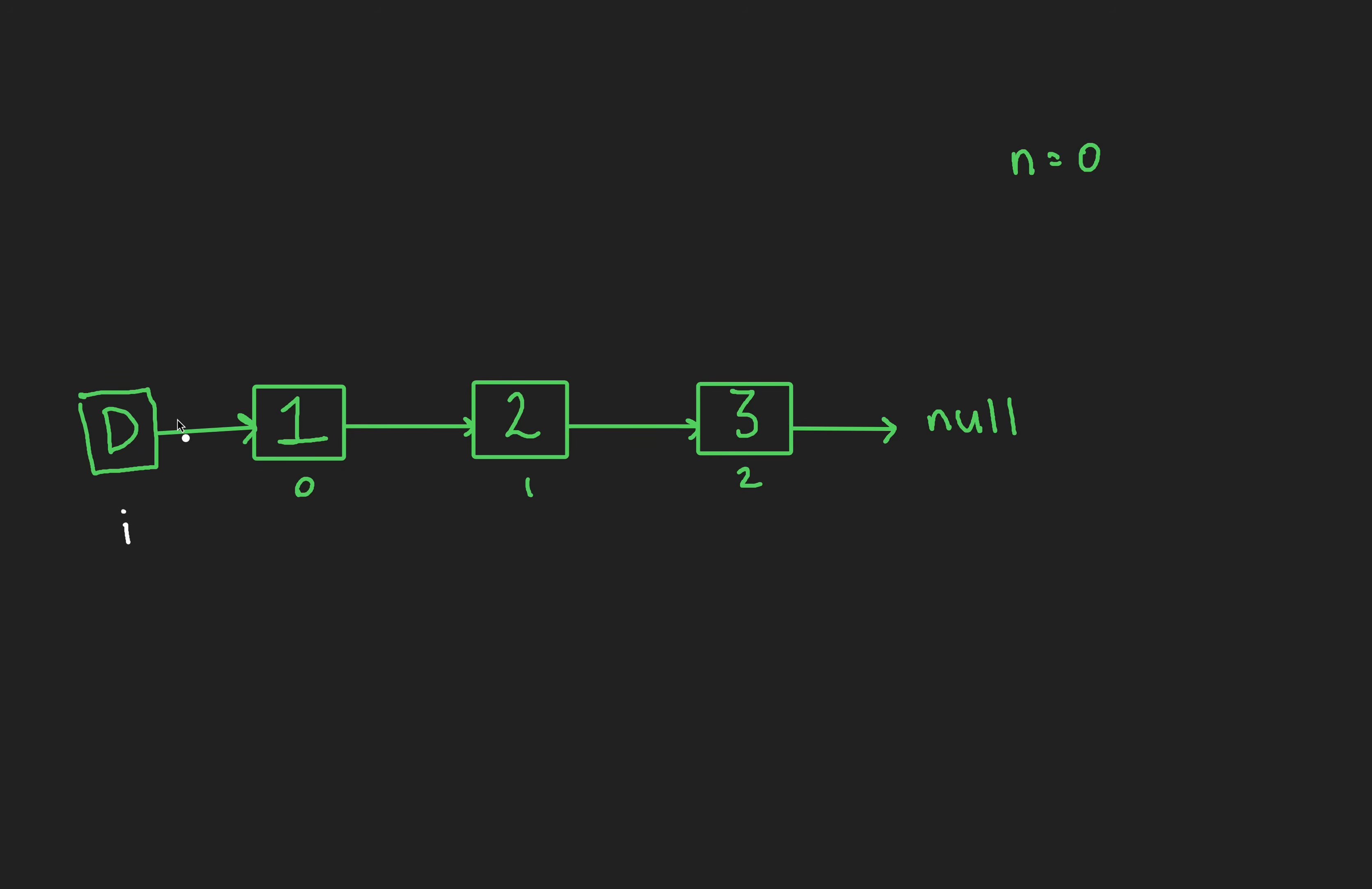and set node i's next pointer to i next next to node 2. With this, node 1 poofs into oblivion, and like before, we'll return dummy next to return the head node of our linked list, this is our answer, this is what we return.